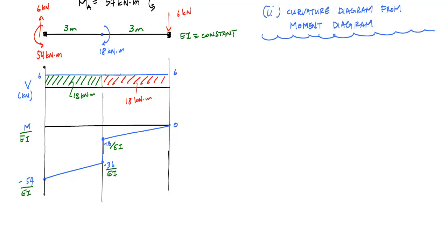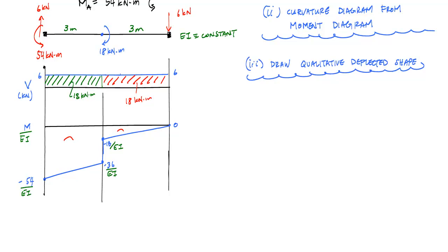Now that we have the curvature diagram, I like to draw at least a qualitative displaced shape of the structure. From the moment diagram, I know this is going to be concave down on both sections. Obeying the boundary conditions and matching the moment diagram, I get the qualitative deflected shape. Drawing this is not always easy, especially when loading is complicated — it takes a lot of practice seeing different types of structures and loadings over and over again.